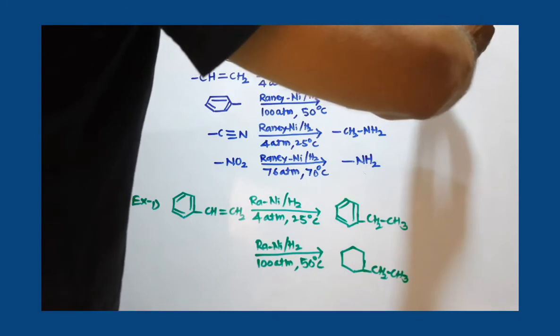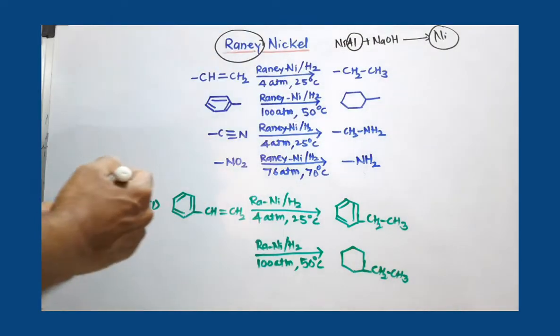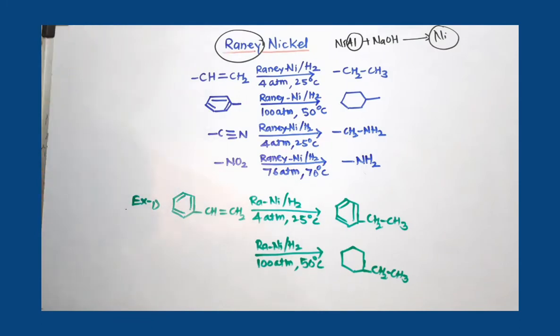This grey colored fine powder of nickel is called Raney Nickel. Because of its high surface area, this is a good catalyst. This catalyst is used for the reduction purpose or addition of hydrogen.